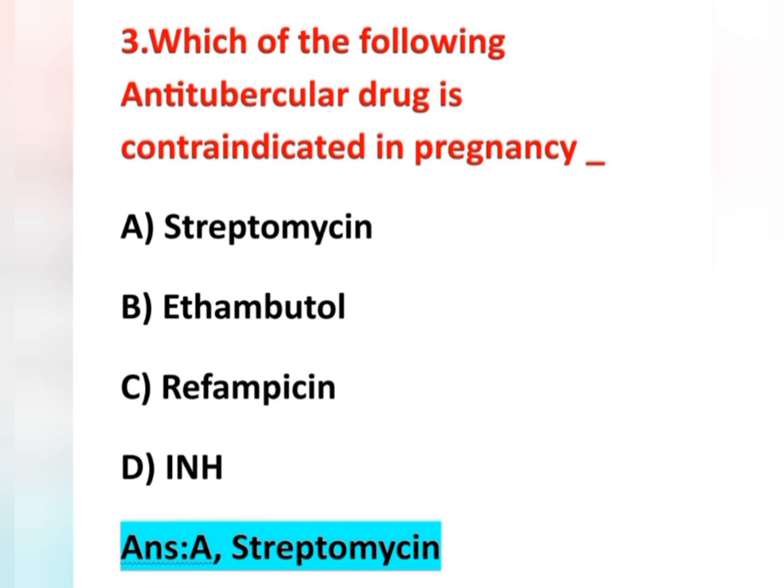The other anti-TB drugs: ethambutol's adverse effect is ocular toxicity — it affects the eyes. Rifampicin may cause red or orange color of urine. Isoniazid causes peripheral neuritis — it affects the synthesis of vitamin B6 (pyridoxine), and deficiency of vitamin B6 causes neuritis.